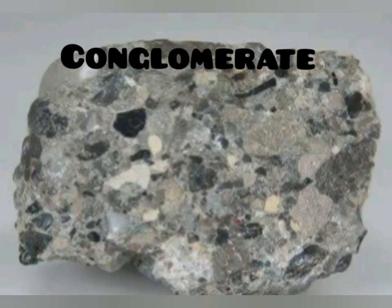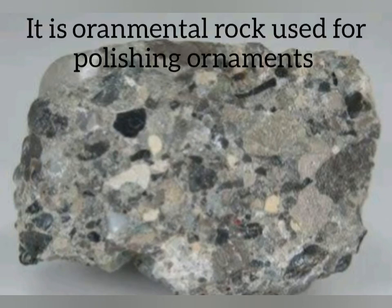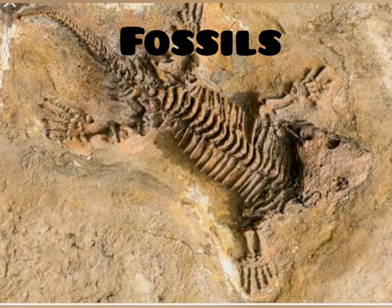The next one is conglomerate. Conglomerate is a rock made up of pebbles and gravel held together by minerals and sand. Such rocks are either gray or orange in color. It is sometimes used as an ornamental rock for polishing various ornaments. The last topic is fossils. Fossils are the dead and decayed remains of animals or plants. Sedimentary rocks contain remains of ancient plants and animals called fossils. These may be bones of animals, their shells and prints of leaves. These fossils help scientists understand what kind of life existed on earth before.